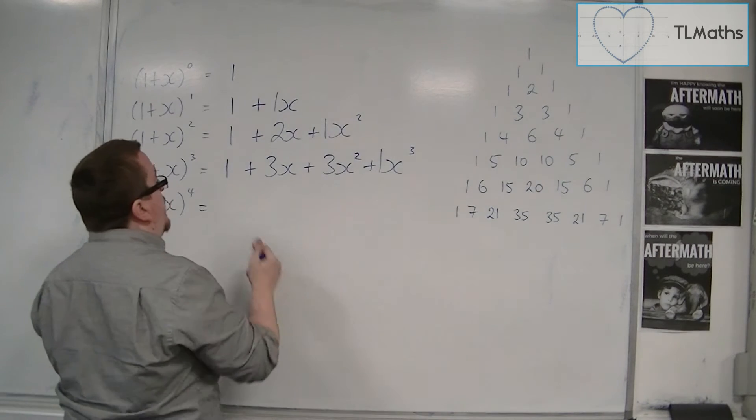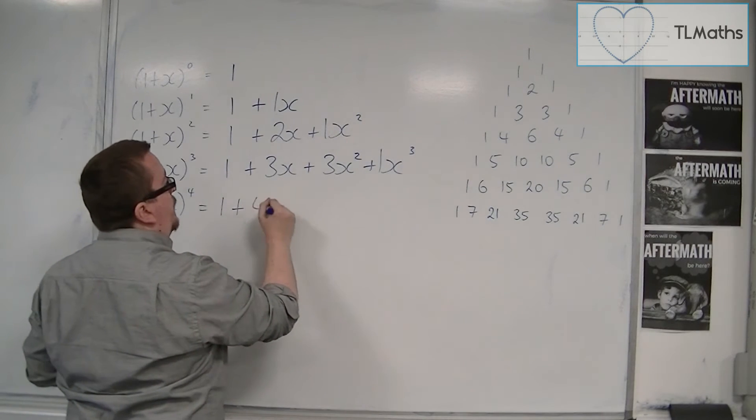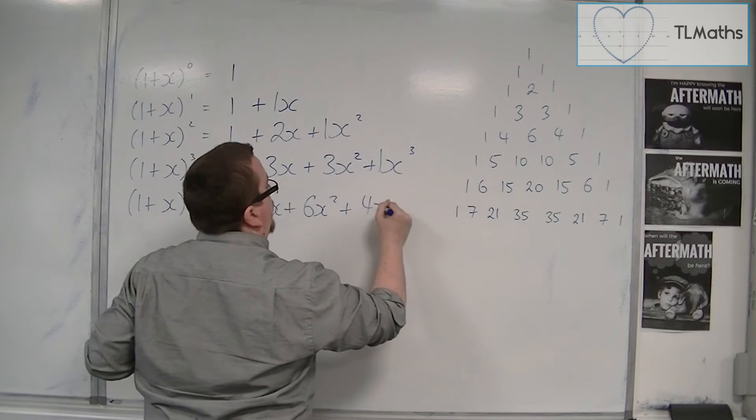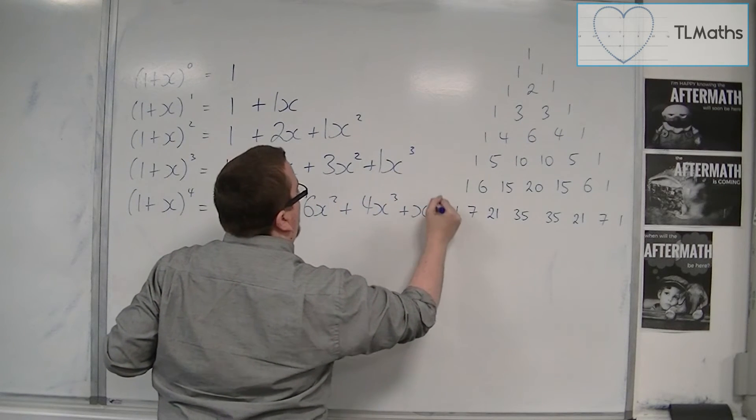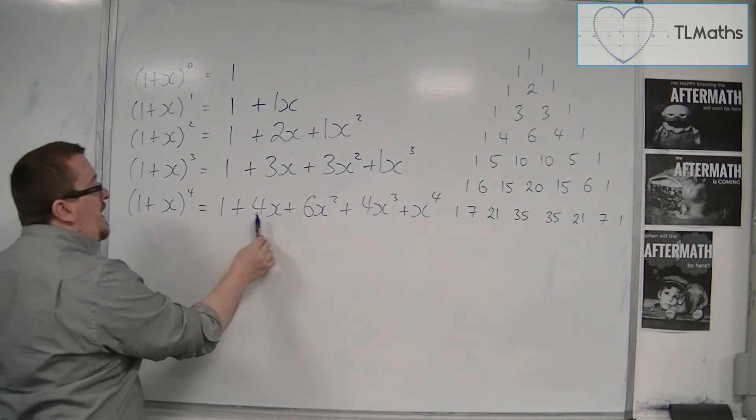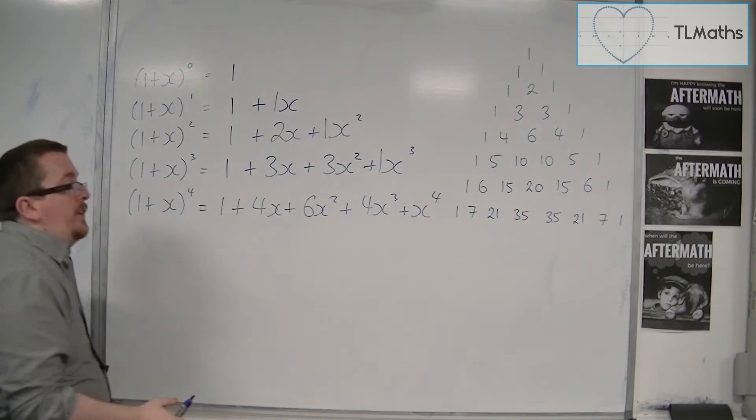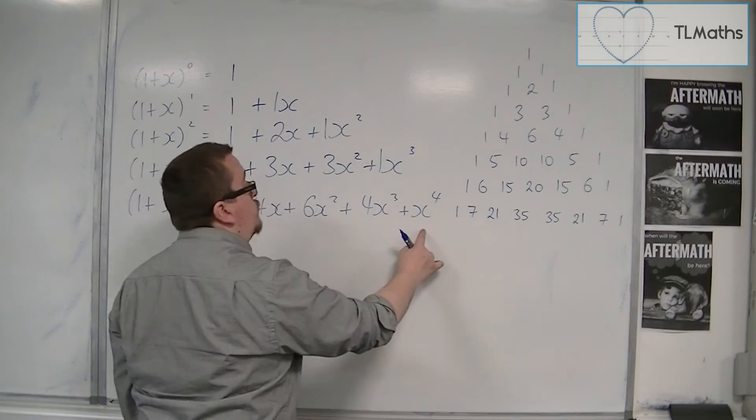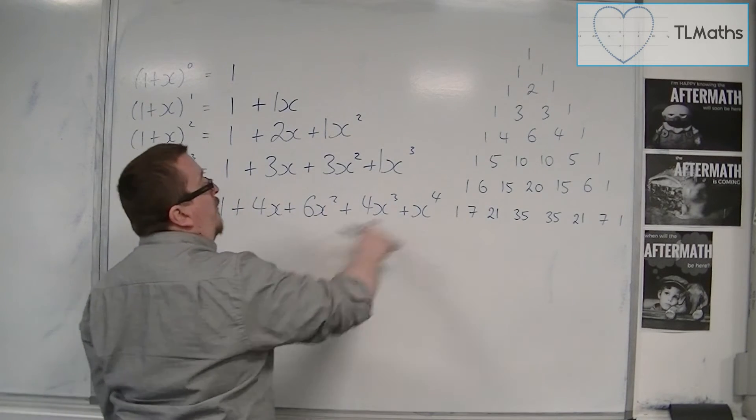And so the next row you would then assume is 1 plus 4x plus 6x squared plus 4x cubed plus x to the 4. So you can see that the x's are increasing in power. And I'm just writing out Pascal's triangle, or Pascal, that row of Pascal's triangle.